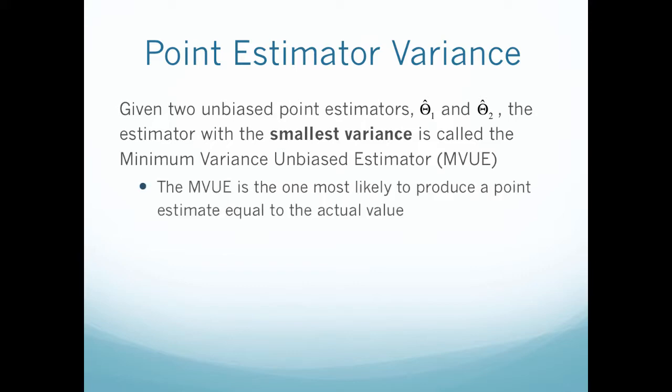The MVUE is the one most likely to produce a point estimate equal to the actual value. The MVUE is also important when it comes to distributions. It's been shown that for a normal distribution, the sample mean is your MVUE. That kind of saves you the step with a normal distribution of having to guess: do I use the median, do I use the standard deviation, do I use the mean? With a normal distribution, your sample mean is going to be your MVUE.